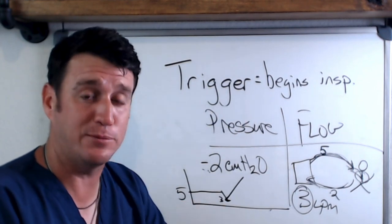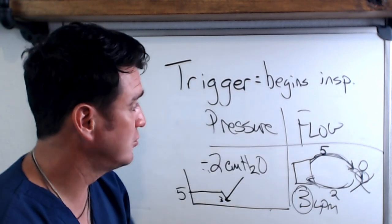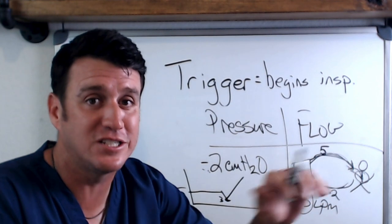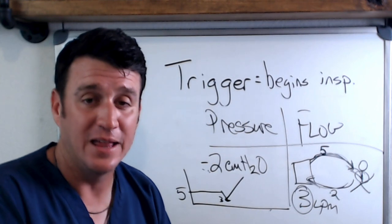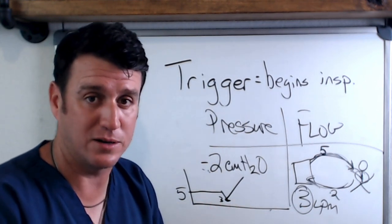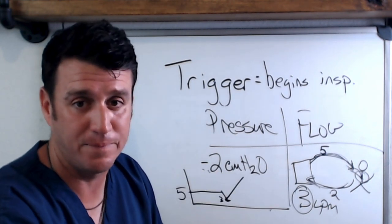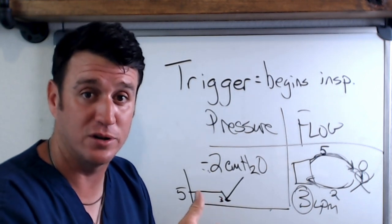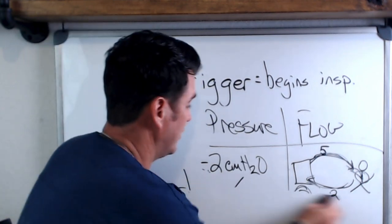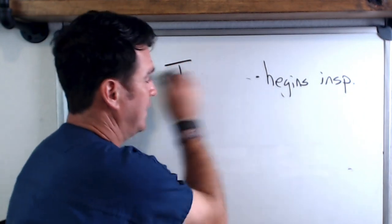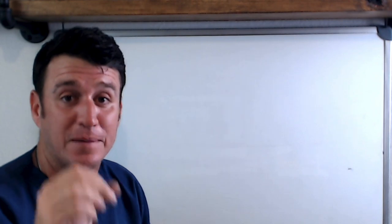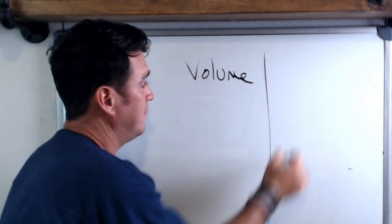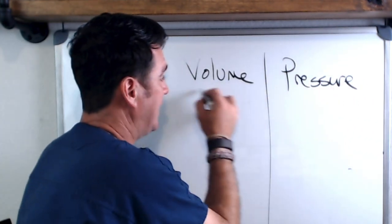You have to understand trigger: time trigger on the vent side, and pressure and flow trigger on the patient side. Pressure, flow, or volume triggering have no effect on the ventilator's time trigger — these are two different types of triggers that are always happening simultaneously. The vent is always operating off a time trigger and is always sensitive to a patient trigger. Once you understand those three terms — trigger, cycle, and limit — you are well on your way to learning specific modes of mechanical ventilation.